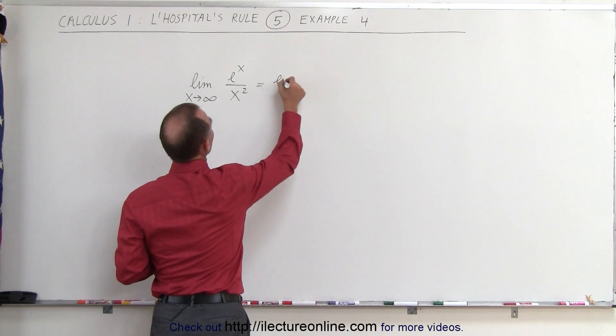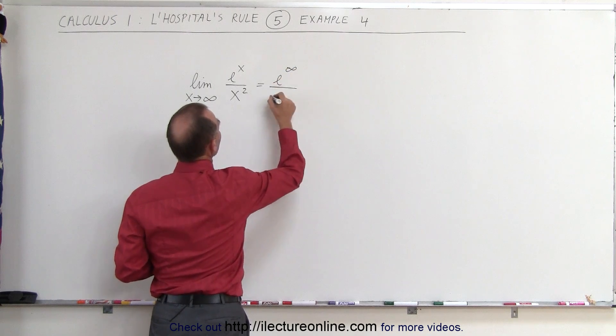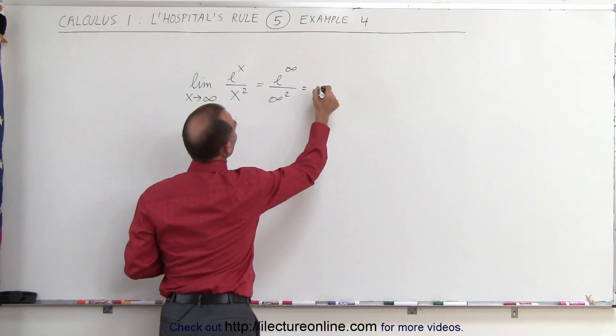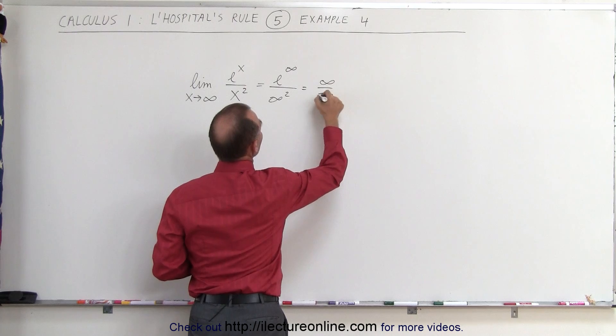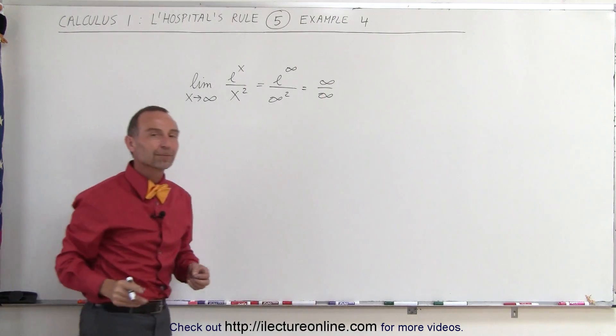So this would be equal to e to the infinity divided by infinity squared, which is equal to infinity divided by infinity, which of course is undefined.